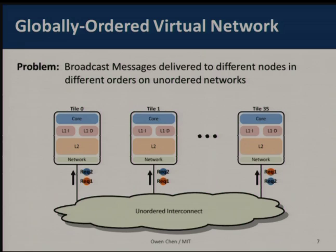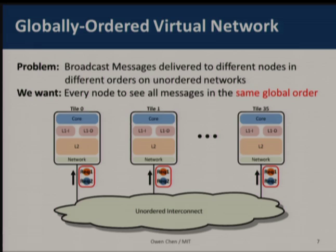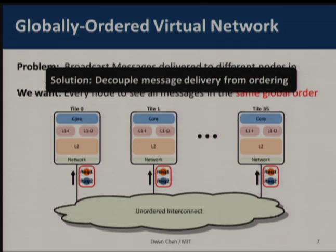The key contribution of this work is how to support Snoopy coherence on an unordered network. The problem is that on an unordered network, different nodes may receive broadcast messages in different order. For example, tile 0 and tile 1 might see request 2 followed by request 1, while tile 5 and tile 6 see them in the opposite order. For Snoopy coherence, we want all nodes to see all messages in the same global order.